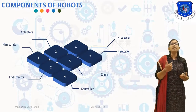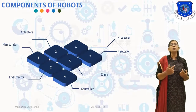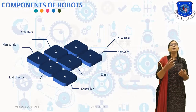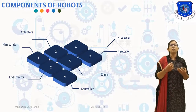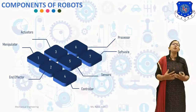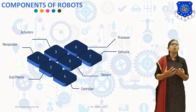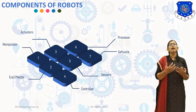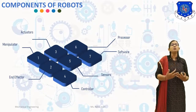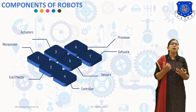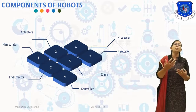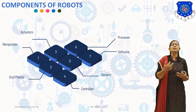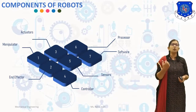The next component is the end effector, also known as the hand of the robot. The end effector is the part connected to the last joint of the manipulator, which performs the required task or handles objects. The robot has a provision for connecting the end effector, which is specially designed for a purpose. The end effector is either controlled by the robot's controller or the controller communicates with the end effector controlling device, like a programmable logic controller.